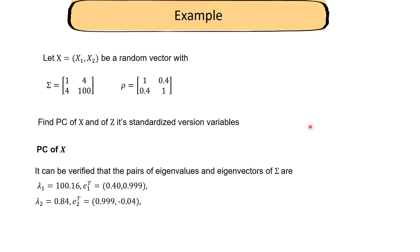Moving on to an example: we have matrix x with two elements x1 and x2. We're given the covariance matrix and the correlation matrix. The question is to find the principal components of both x and z, where z is the standardized version of x. For PCA we need eigenvalues and eigenvectors of Sigma. Using R, the first eigenvalue is 100.16 with its eigenvector, and the second eigenvalue is 0.84 with its eigenvector.